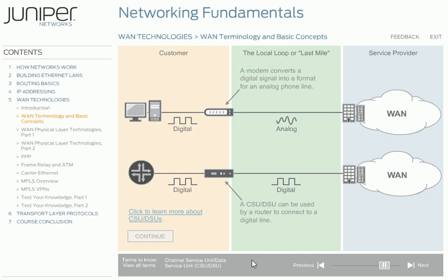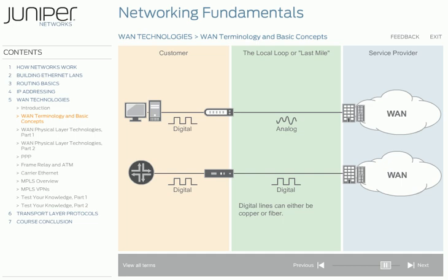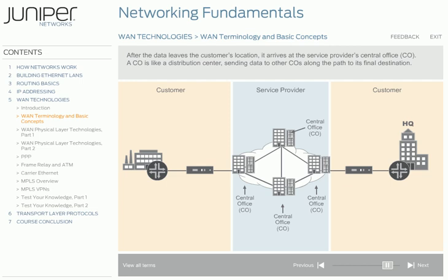Digital lines can either be copper or fiber. In fact, it is not the type of connection — copper or fiber — that dictates the type of line. Rather, it is the equipment being used on the line that dictates whether the line is analog or digital. After the data leaves the customer's location, it arrives at the service provider's central office. A CO is like a distribution center, sending data to other COs along the path to its final destination. Within any large city, a service provider might have several COs interconnected using high-speed fiber-optic trunk lines. Some COs might connect to other service providers, such as international carriers. Within a central office, you'll find the different kinds of switches that make this communication possible. The switches take the customer's data and send it to the correct location.